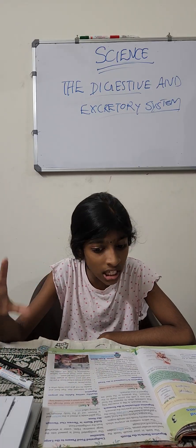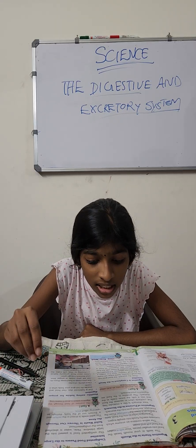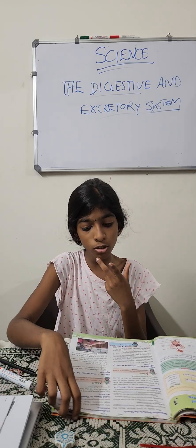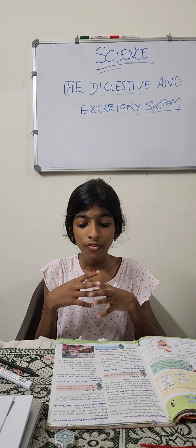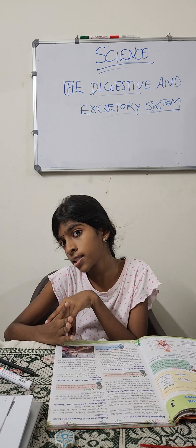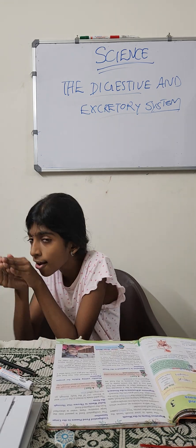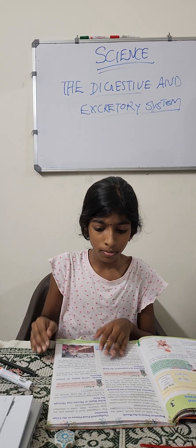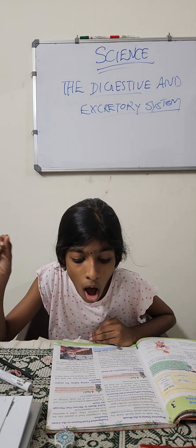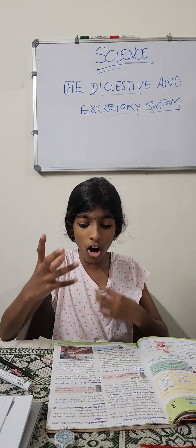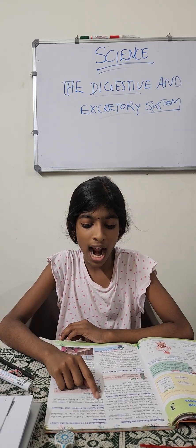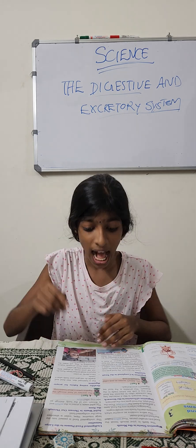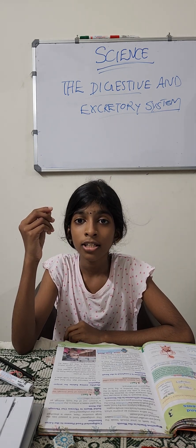After digestion is completed in the small intestine, our food passes into the large intestine. In the large intestine, water is absorbed from the undigested food.